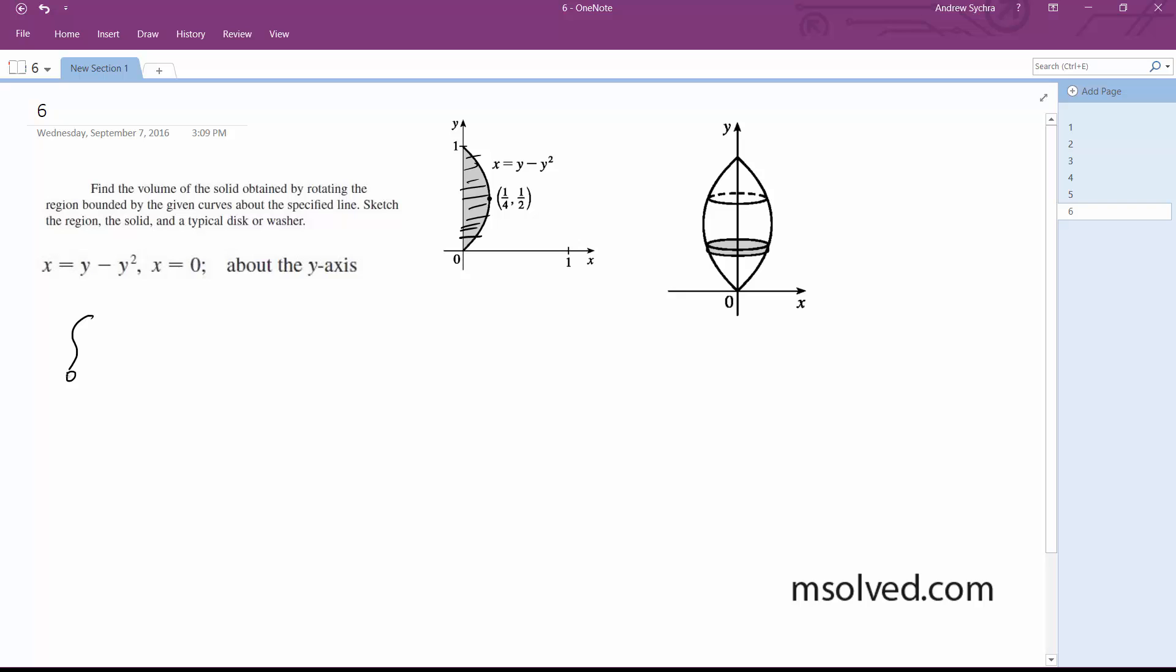So we're going to go from 0 to 1. It's going to be pi, and this is going to be y minus y squared, squared dy.